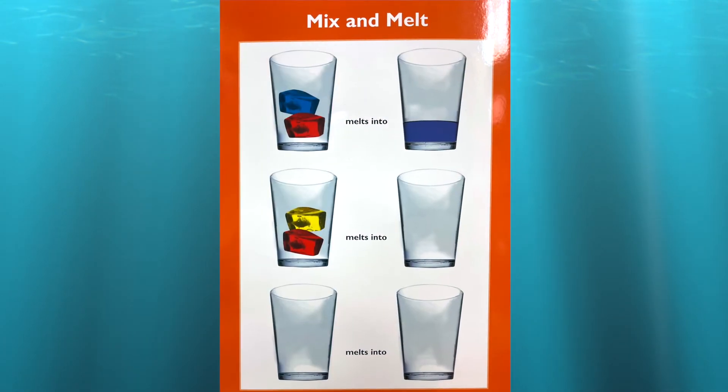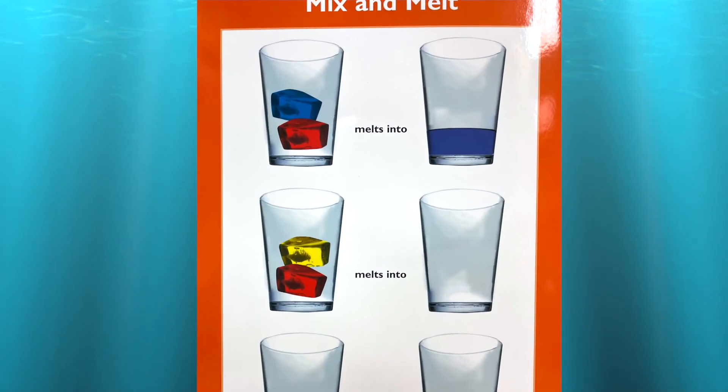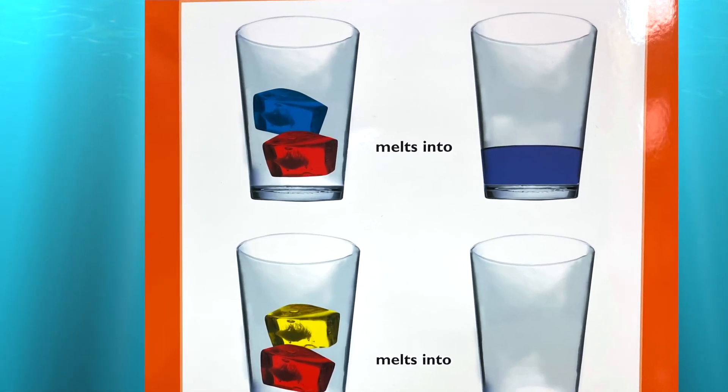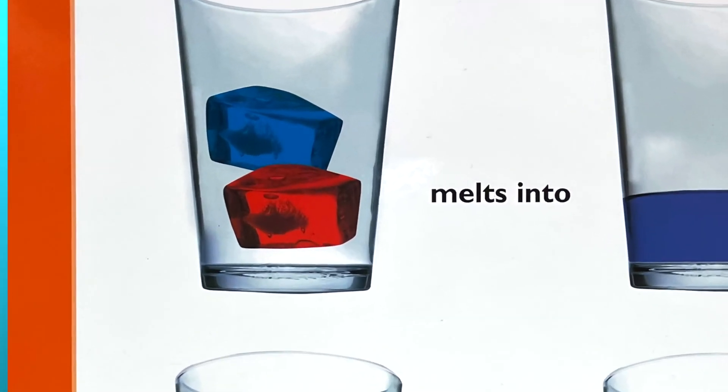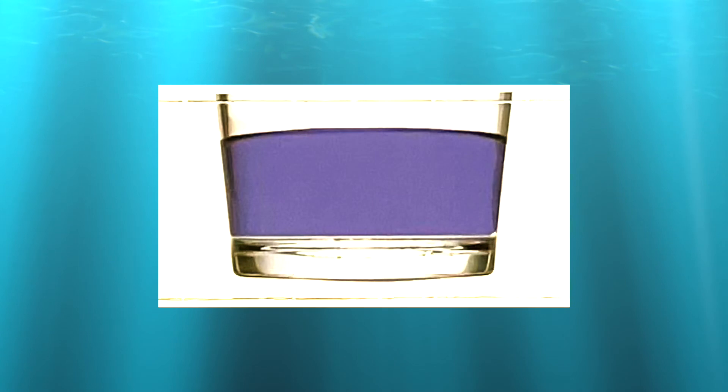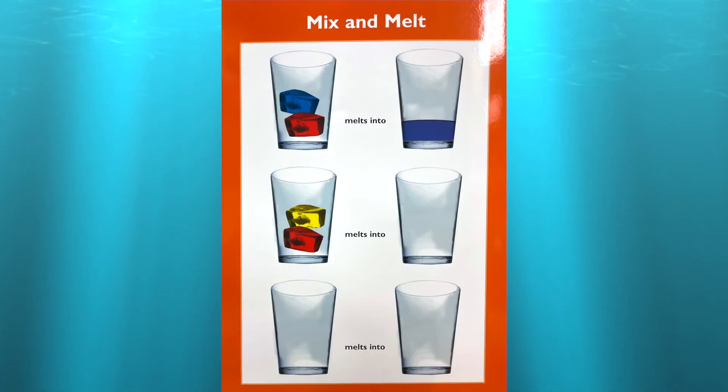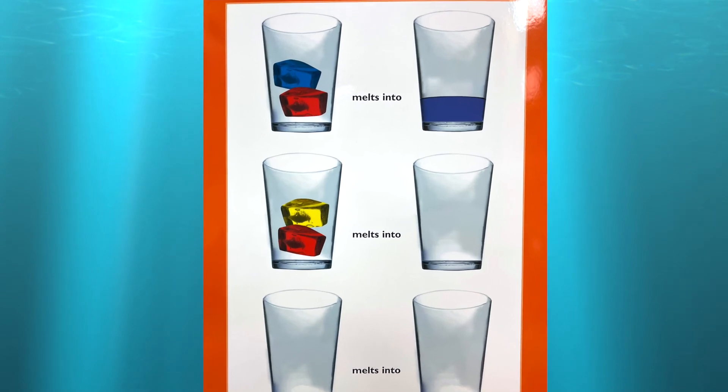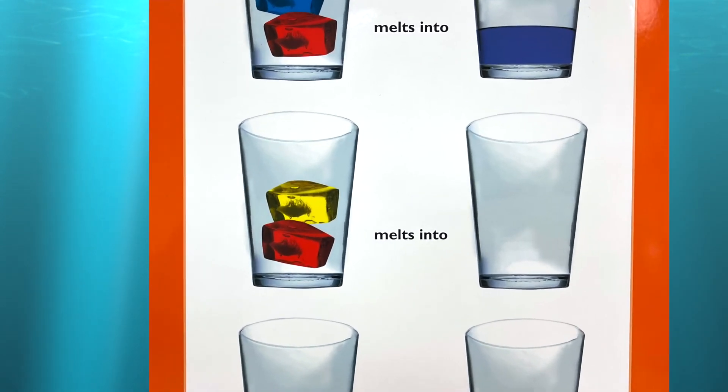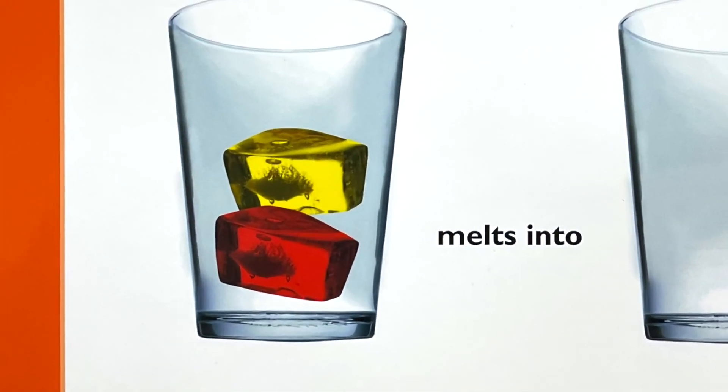Look at the top row. A blue ice cube and a red ice cube have melted and mixed together. They turned into purple water. Now look at the middle row. A red ice cube and a yellow ice cube will